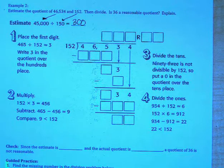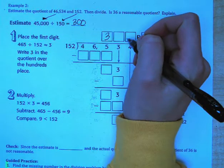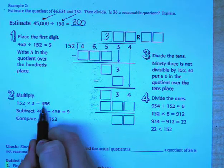So we have 46,534 divided by 152. Our first step is to place the first digit. 465 divided by 152 is approximately 3. So we're going to write 3 over the hundreds and multiply 152 times 3 is equal to 456.